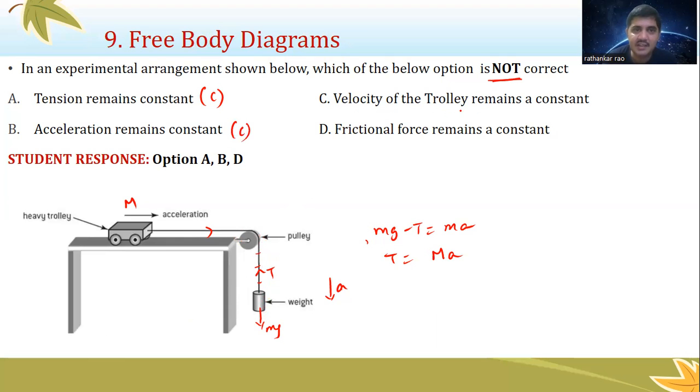Then velocity of the trolley remains constant. Now look at this. When you say acceleration remains constant, that means there is some acceleration, which means that acceleration is not zero. How do you know it's not zero? Let us substitute this.